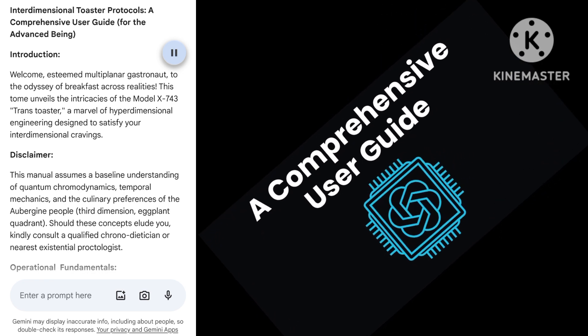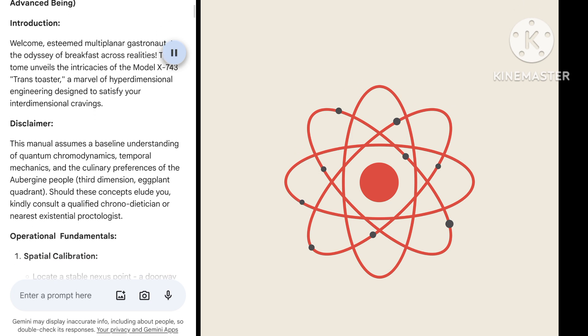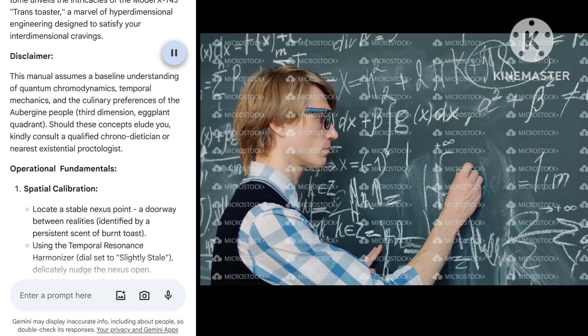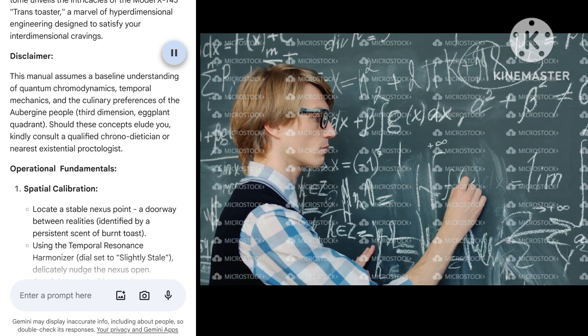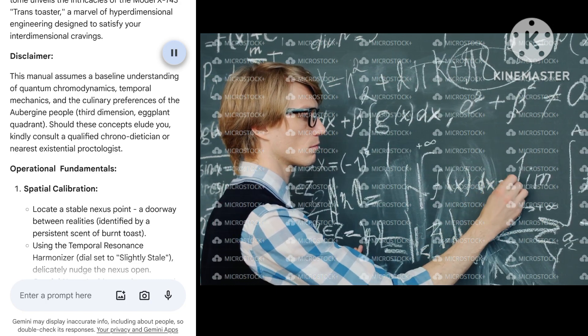Disclaimer: This manual assumes a baseline understanding of quantum chromodynamics, temporal mechanics, and the culinary preferences of the Aubergine people (third dimension eggplant quadrant). Should these concepts elude you, kindly consult a qualified chrono-dietitian or nearest existential proctologist.